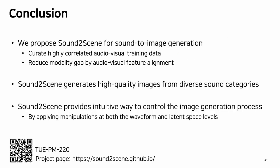In conclusion, we proposed Sound-to-Scene for sound-to-image generation. We curated highly correlated audiovisual training data and reduced the modality gap through audiovisual feature alignment. Sound-to-Scene generates high-quality images from diverse sound categories, and provides an intuitive way to control the image generation process by applying manipulations at both the waveform and latent space levels. For more details, please visit our poster and the project page. Thank you for listening.